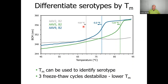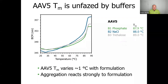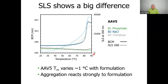Now let's look at one serotype in different conditions. For AAV5, the melting temperatures in phosphate, sodium chloride, and trehalose buffers are all pretty similar — varying by only about one degree Celsius. However, when we take the static light scattering information into account to monitor aggregation, a much more varied picture emerges. Phosphate shows very little aggregation, trehalose shows a little more, but there is a lot of aggregation occurring in the sodium chloride buffer. So AAV5's capsid protein melting is not very dependent on buffer, but aggregation is affected by the formulation.